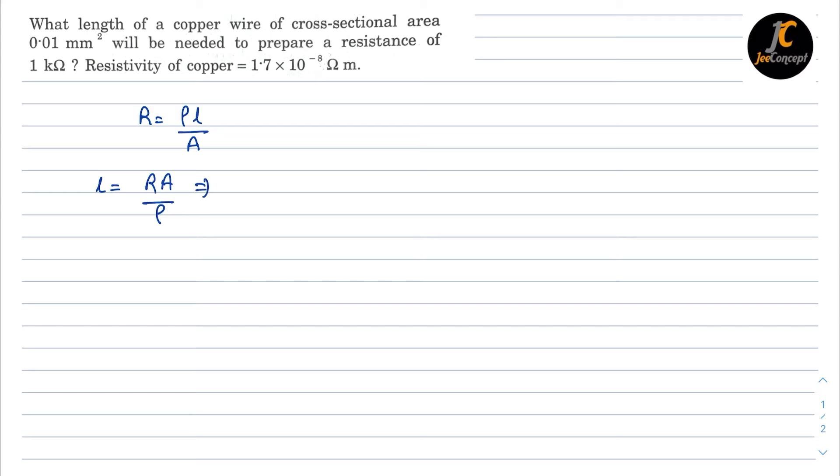So we will put the value R is 1 into 10 raised to power 3 ohm into area is 0.01 mm square so I am converting it into meter square upon the value of resistivity which is 1.7 into 10 raised to power minus 8.